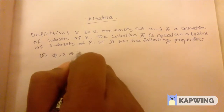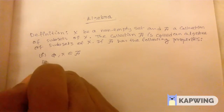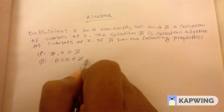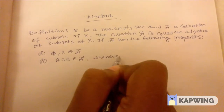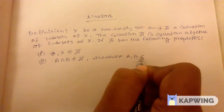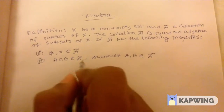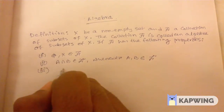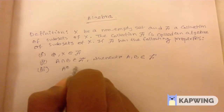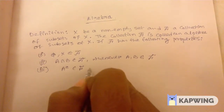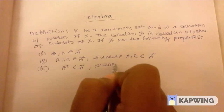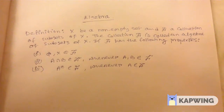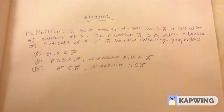Property one: x belongs to f, the collection of subsets of x. Property two: A intersection B belongs to the collection f, whenever A and B each belong to the collection f. Property three: the complement of A belongs to the collection f, whenever A belongs to the collection f. Then f is called the algebra of subsets of x.